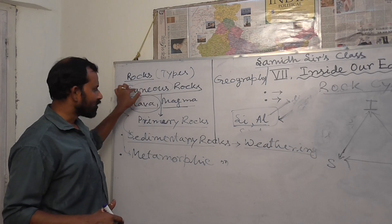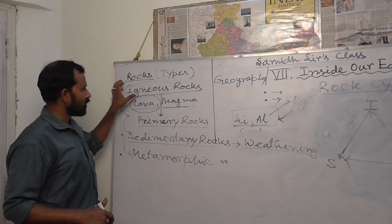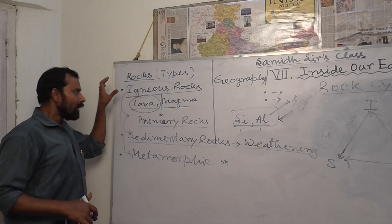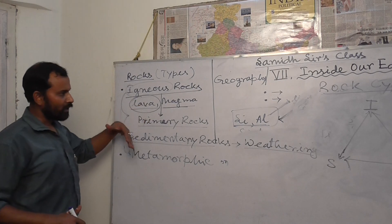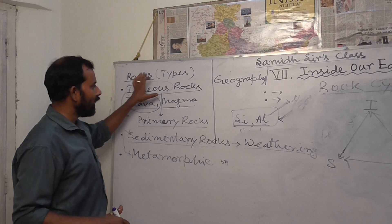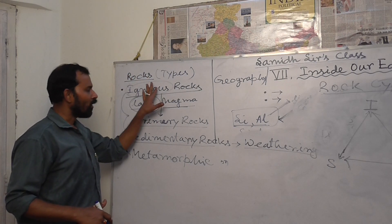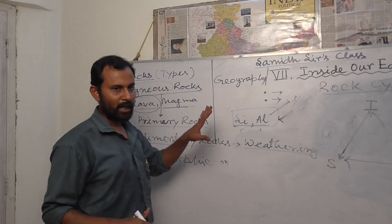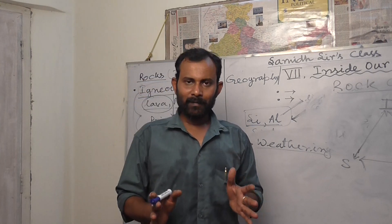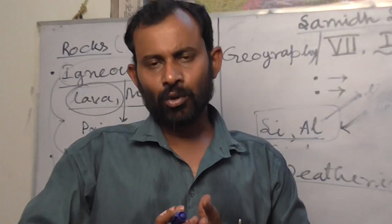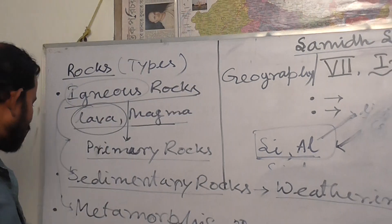Igneous rock is also made by different types of minerals — a huge concentration of minerals is found in igneous rock, as lava and magma bring materials from the earth's interior and they settle on the earth's crust as igneous rock. Mainly, plateau regions are made by igneous rock. In class 6, you already learned that plateaus are the storehouse of different minerals — this is because they are made up of igneous rocks.